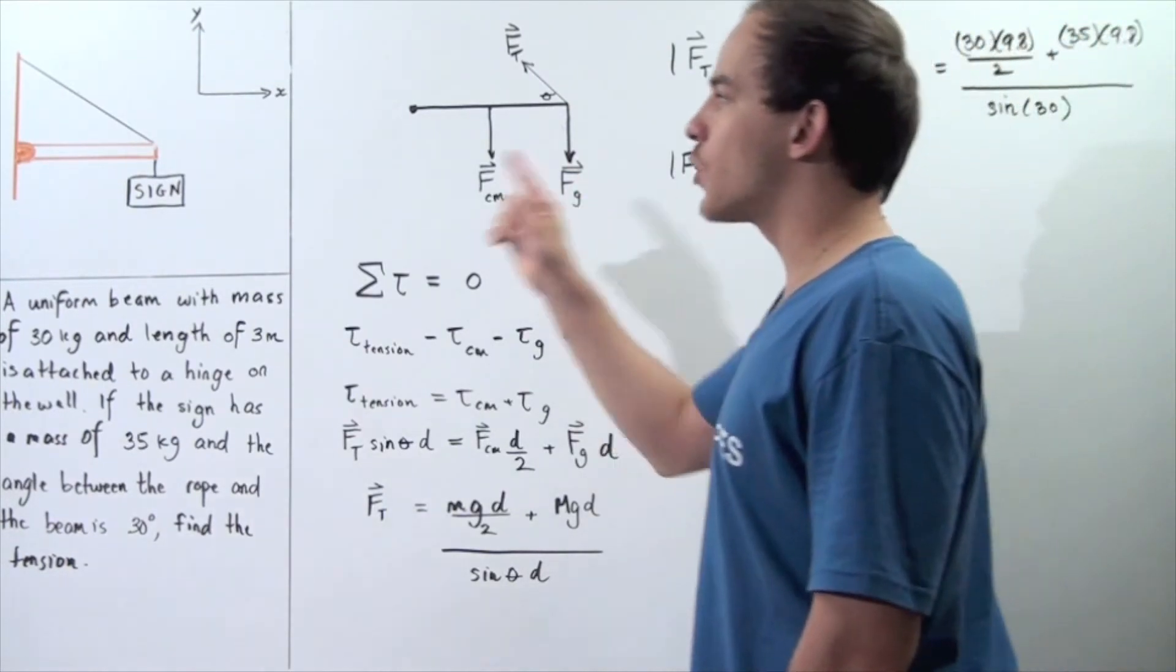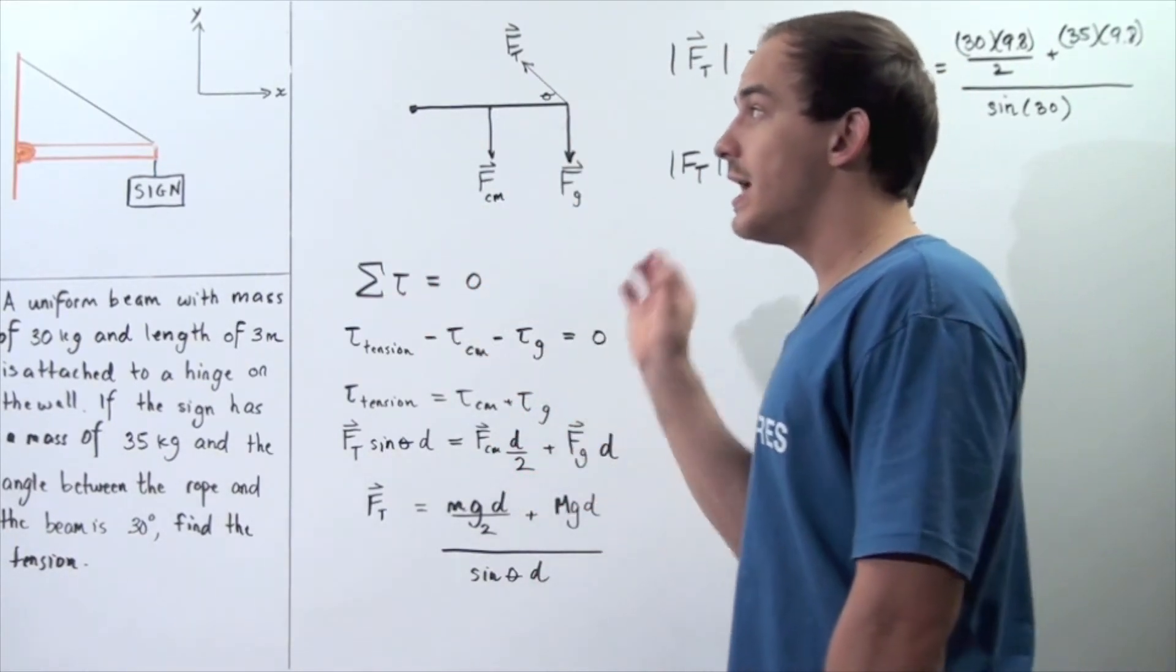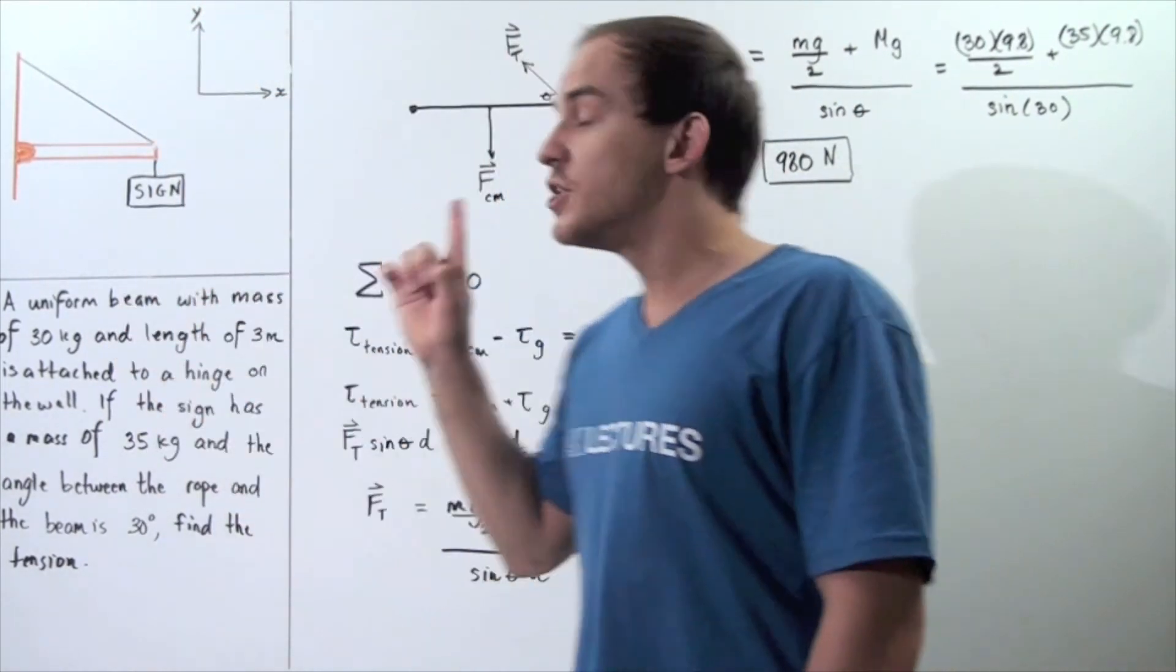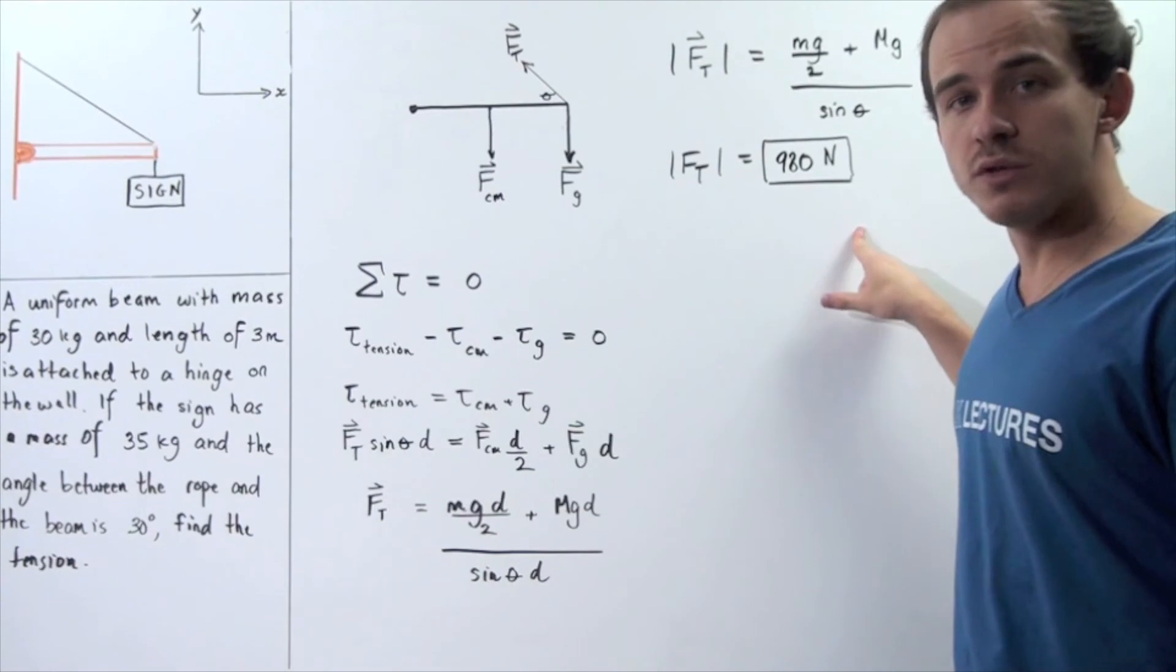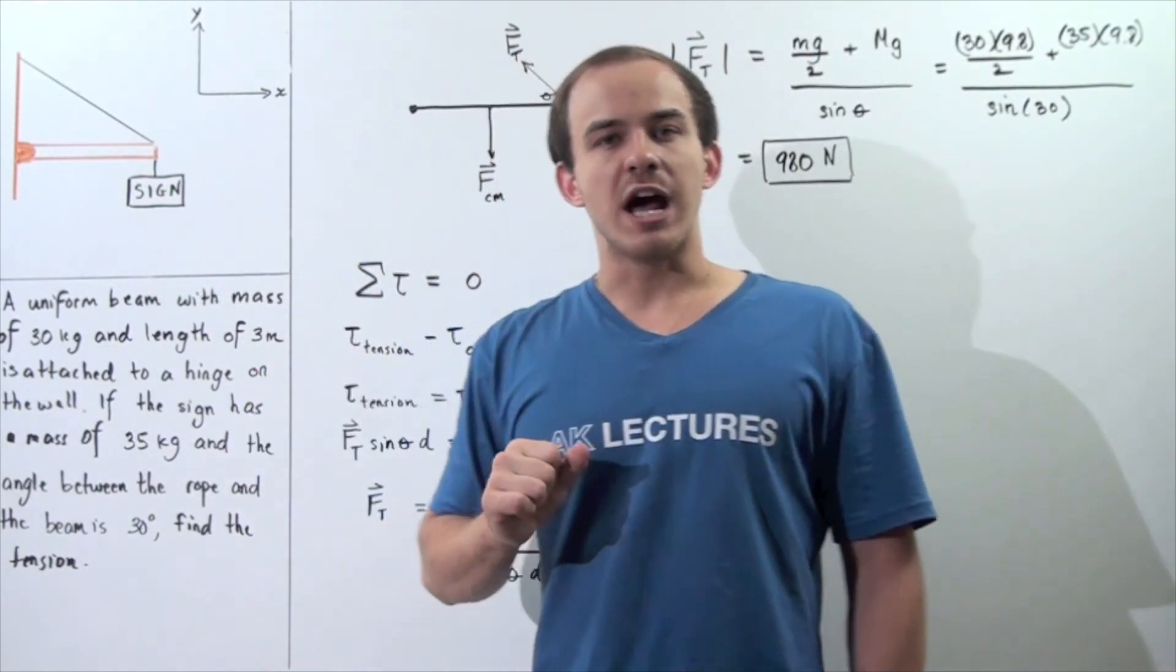In other words, in order for our object, the beam, to be in static equilibrium, the tension in our rope should be 980 newtons. This way, the sign will not move and the beam will also not move.